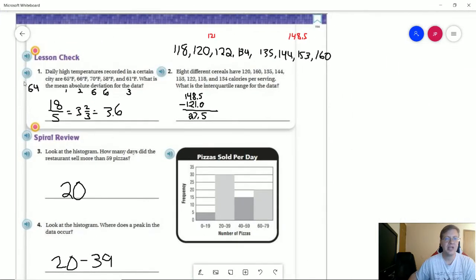Going to the back, we have a mean of 64 degrees Fahrenheit. So we should end up with 18 fifths, and then that translates to being 3.6 degrees Fahrenheit for our mean absolute deviation.